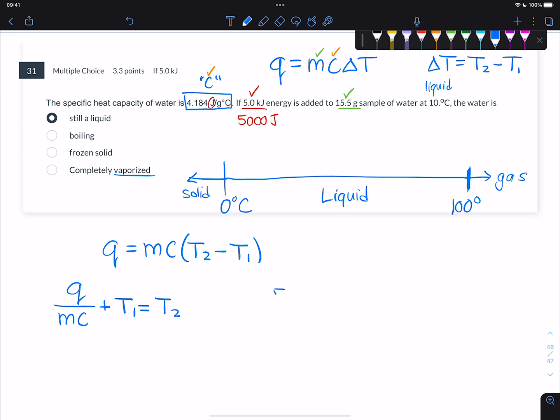And you just plug everything in. 5,000 joules, let's do some units here, divided by the mass, which is 15.5 grams, divided by, also we have C in the denominator, which is 4.184 joules per gram degrees Celsius. We're adding to that the 10 degrees.